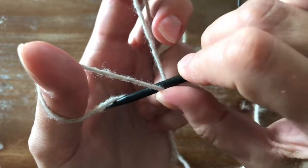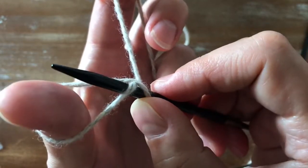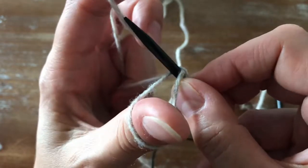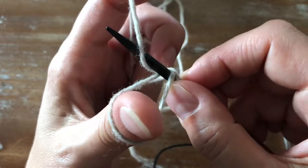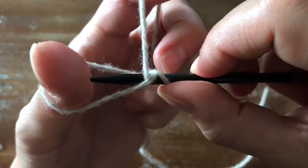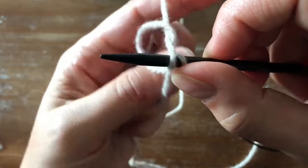Now go under the strand that's closest to you through the loop, over the strand that's on your index finger, pick it up and go back through the loop. Now let go and pull.